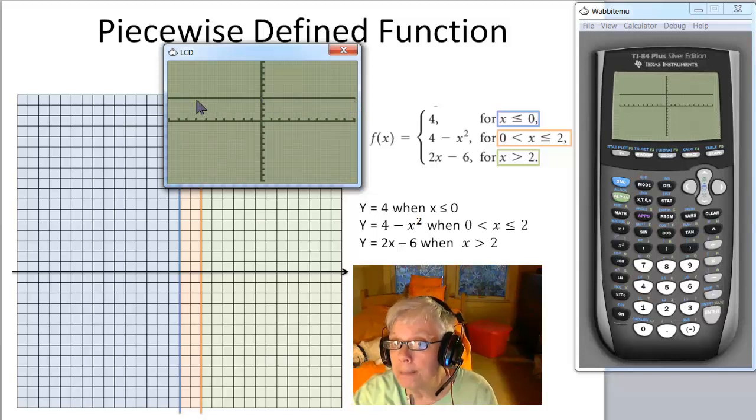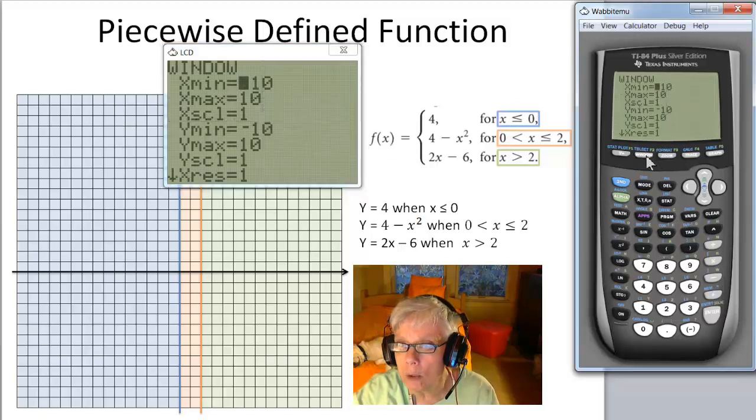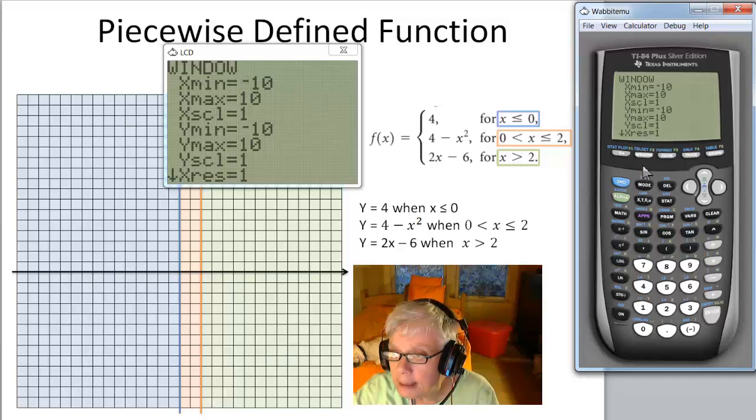Now, this is only going to be true from the y-axis over to the left. So let's go to the window and adjust this. For instance, x max is going to be 0, so down and 0.